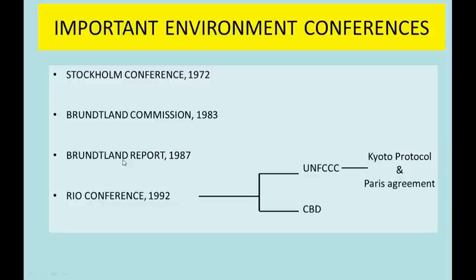In the Rio Conference of 1992, actual guidelines on sustainable development were formulated. All countries across the world discussed appropriate ways to achieve a sustainable pattern of development. In that same year 1992, two important bodies were formed: UNFCCC, the United Nations Framework Convention on Climate Change, which was primarily created to control climate change and remains active today, and also led to the formulation of the Kyoto Protocol and the Paris Agreement.